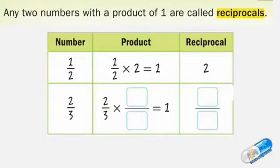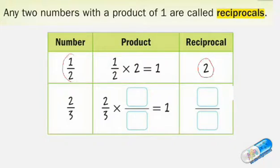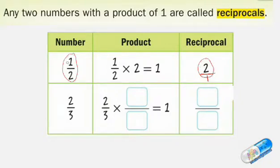Dividing fractions: any two numbers with a product of 1 are called reciprocals. Look at this fraction, 1 over 2, or one half. Half has a reciprocal which is 2, or 2 over 1 as a fraction. The numerator was 1 and the denominator was 2; in the reciprocal it's the opposite — 2 becomes the numerator and 1 becomes the denominator. So the reciprocal is the inverse of the fraction.